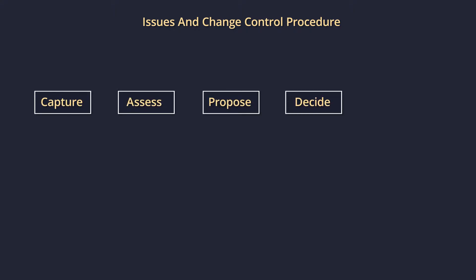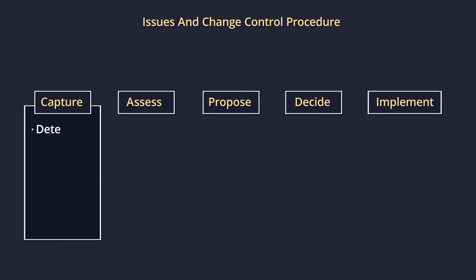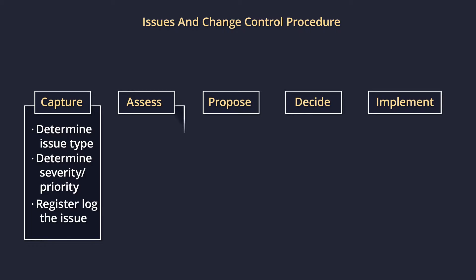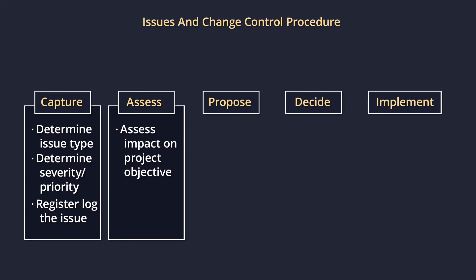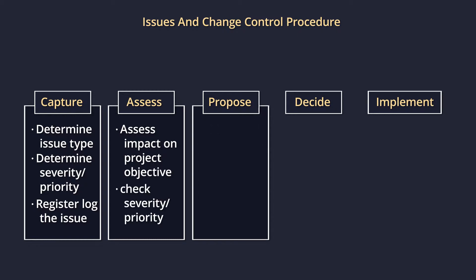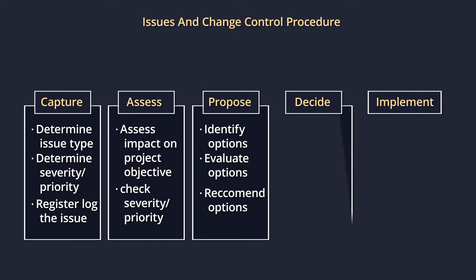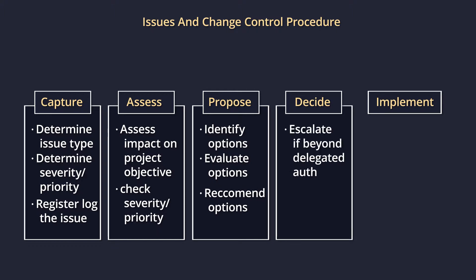The issue and change control procedure has five activities: capture, assess, propose, decide and implement. During the capture step, determine the type of issue and decide if it needs to be managed formally or informally. Issues to be managed formally should be entered in the issue register. The daily log may be used to record issues being managed informally. The purpose of distinguishing between formal and informal management is to ensure decisions are made at an appropriate level within the project management team, and to avoid the project board being inundated with too many issues, reducing the administrative burden on the project manager when dealing with day-to-day issues.